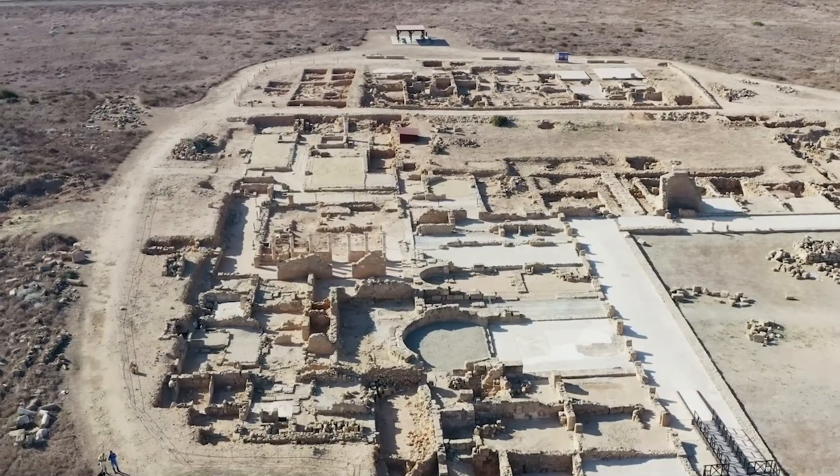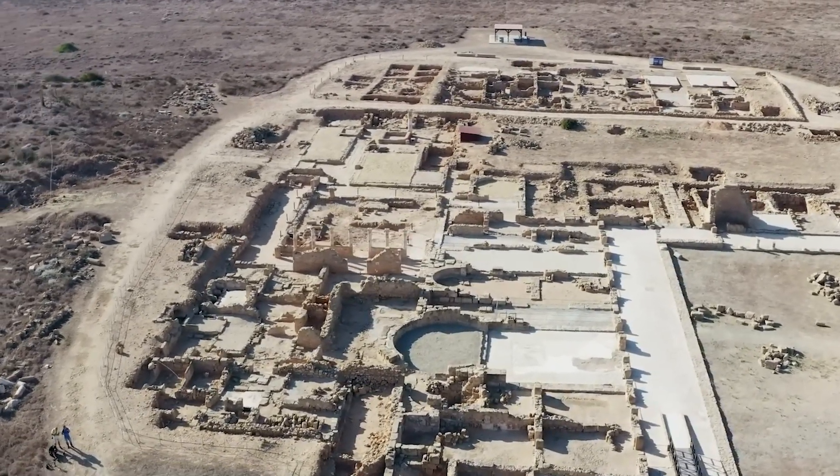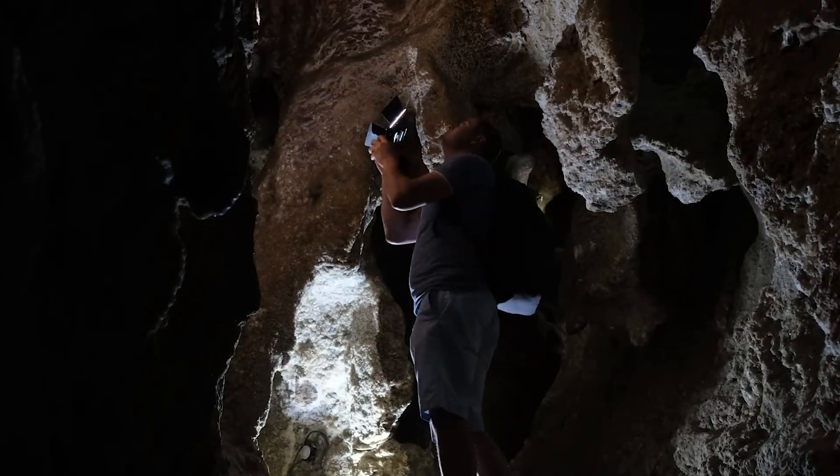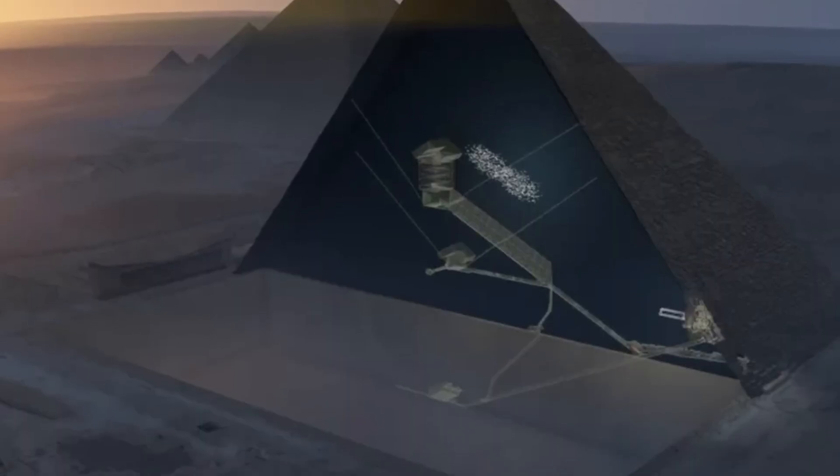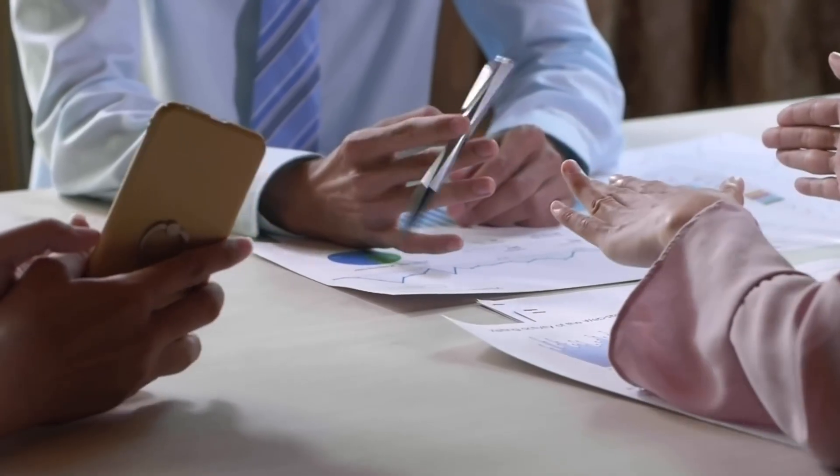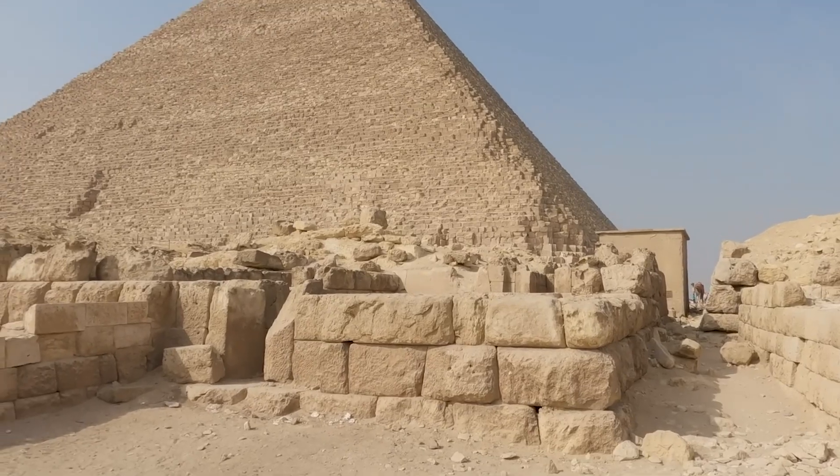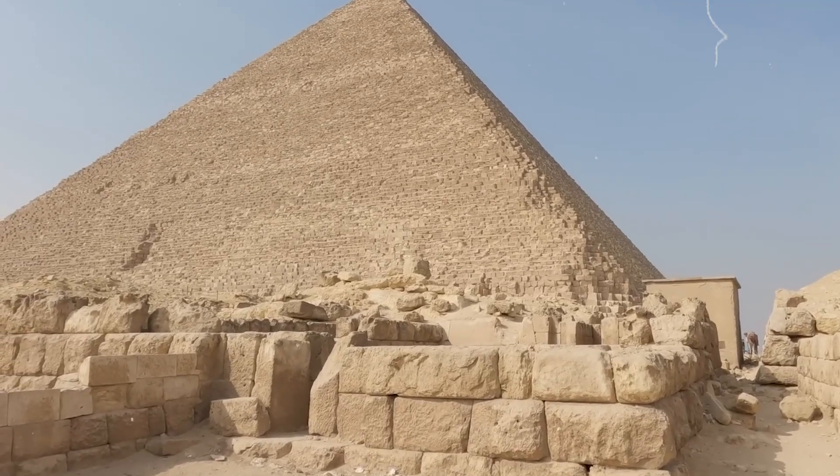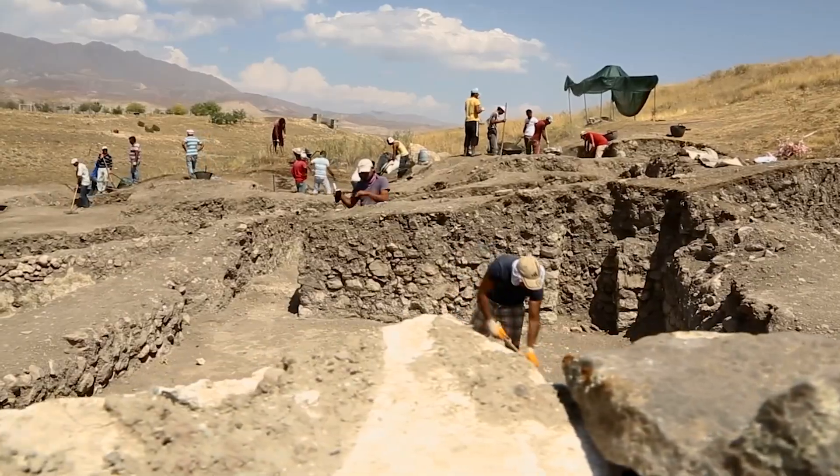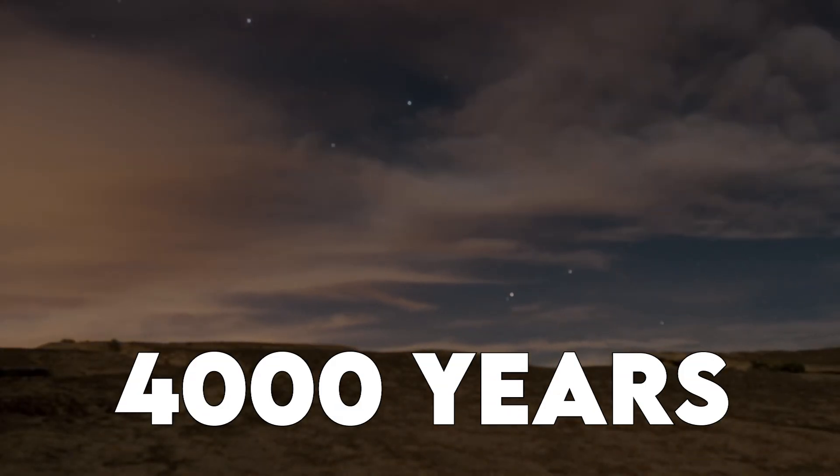To sum it all up, the pyramids of Giza were not built by aliens or magic. They were built by real people using smart techniques, simple tools, and teamwork. The stones were moved by boats and sleds, raised by ramps, and placed with precision. The workers were not slaves, but skilled laborers who worked in shifts and were cared for by the state. Their effort and knowledge made it possible to create structures that have lasted for over 4,000 years.